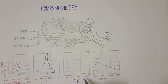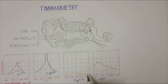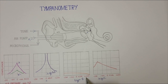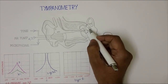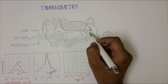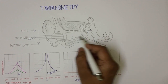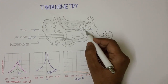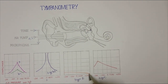In the Type B curve, there is no change in compliance whether you give positive or negative pressure. That means there is something in the middle ear — there might be fluid, as seen in otitis media with effusion. Whether you give positive or negative pressure, the resistance does not change much. This produces a flat curve, which is the Type B curve.